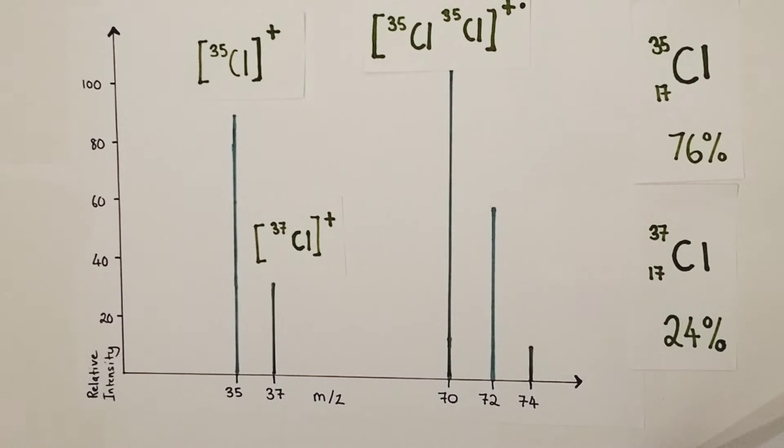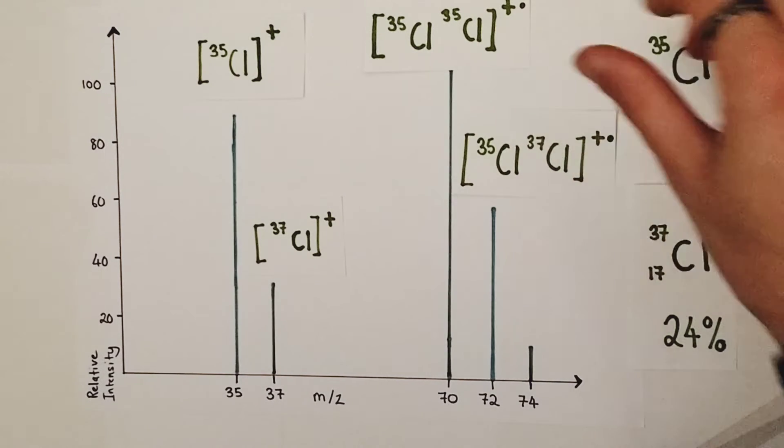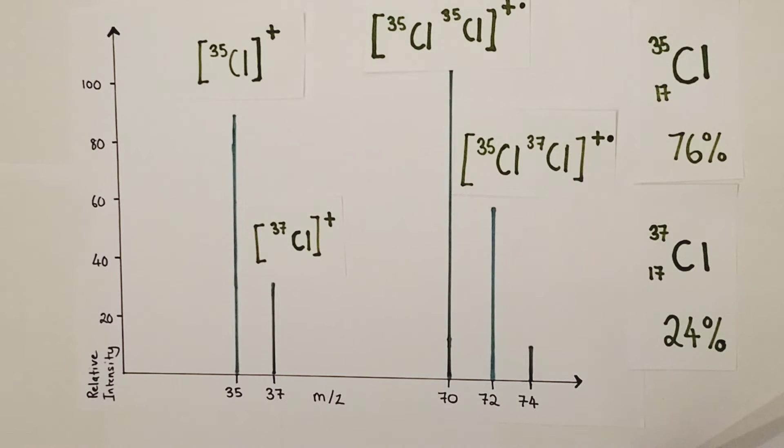If we apply the same logic to the prominent peak of mass charge ratio 72, to form a peak at that particular relative mass we require chlorine-35 atoms covalently bonded to chlorine-37 atoms to form chlorine molecules. Those molecular ions would be Cl-35 bonded to Cl-37 to form chlorine molecules with relative mass of 72. Again these are the molecular ion peaks so they must be positively charged and show the radical.